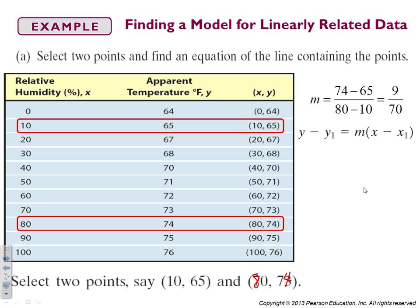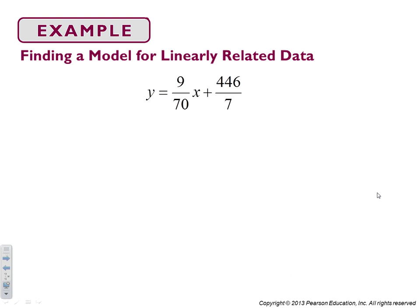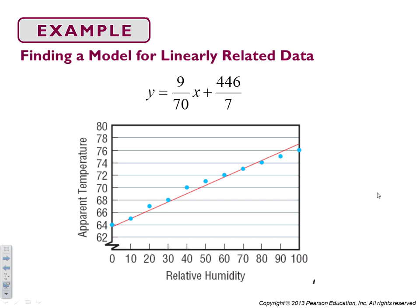So if we plug that into our point-slope formula, we take our first coordinate (10, 65), put 65 in for the y and 10 in for the x and 9/70 in for the slope. We get y equals 9/70 x plus 446 over 7. Nice little linear model. And when you graph that linear equation, it kind of looks like this. And if you see, for the most part it gets really close to each of the data points.